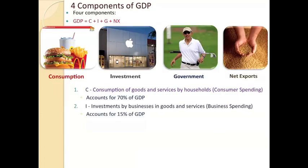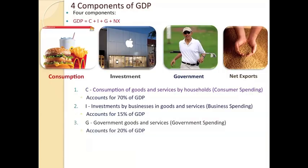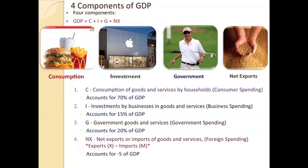Investment spending — spending done by firms and businesses — accounts for 15% of GDP. Government spending accounts for 20% of GDP. And you might be looking at these numbers and saying, wait a second, this is 105%. How is that possible? It's possible because we, as an economy, actually buy more stuff from other countries than we sell to other countries, which means the total amount of exports is less than the total amount of stuff that we buy from other countries, which makes this number currently negative. So net exports is a negative and takes away from GDP.